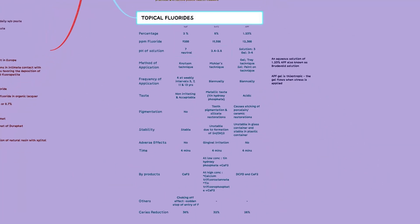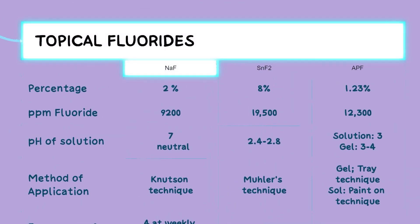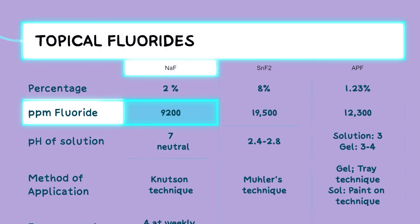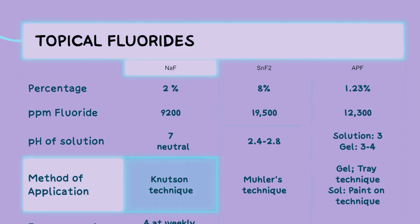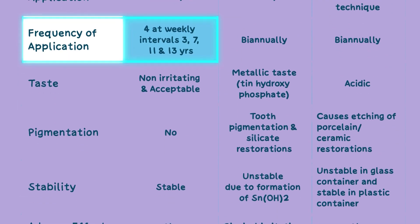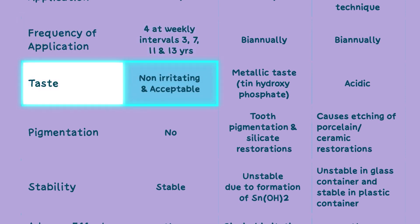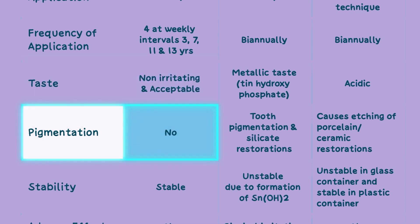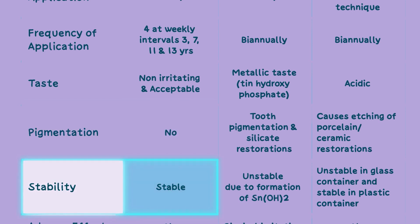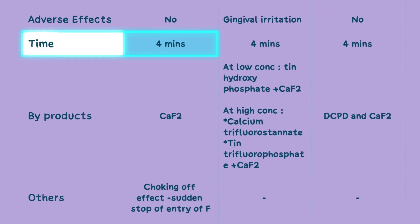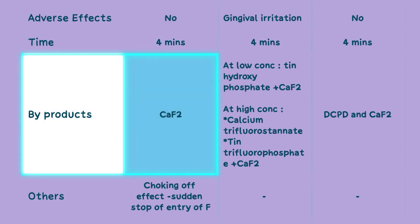Topical fluorides are commonly used in dental care for their caries preventive properties. Solutions used in topical fluorides include sodium fluoride, stannous fluoride, and APF gel. Sodium fluoride, also known as 2% sodium fluoride, has a neutral pH and contains 9,200 parts per million fluoride. Its method of application is the Knutson technique, with 4 applications at weekly intervals at ages 3, 7, 11, and 13 years. It has a non-irritating and acceptable taste, does not cause pigmentation, has no effect on silicate restorations, and is stable with no gingival irritation. Application time is 4 minutes. It results in formation of calcium fluoride as a by-product and reduces caries up to 30%.